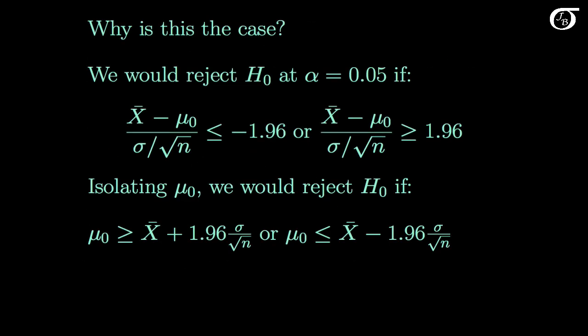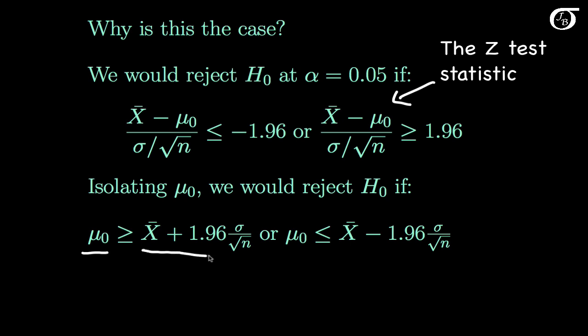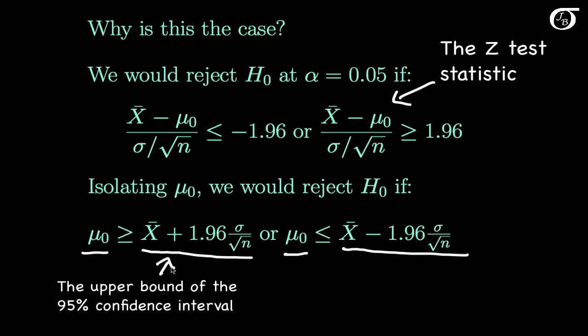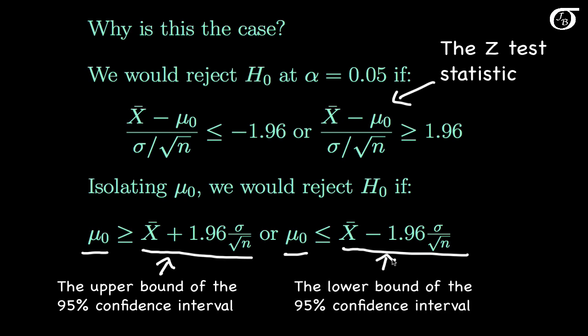Why is this the case? We would reject the null hypothesis at an alpha level of 0.05 if the z-test statistic takes on a value less than or equal to -1.96, or greater than or equal to 1.96. Using a little algebra to isolate mu0, we would reject the null hypothesis if the hypothesized value mu0 is greater than or equal to x-bar plus 1.96 times sigma over the square root of n, or less than or equal to x-bar minus 1.96 times sigma over the square root of n. But this is the upper bound of a 95% confidence interval for mu, and this is the lower bound. So if the hypothesized value falls outside the confidence interval we would reject the null hypothesis, and if it falls within, we would not reject.